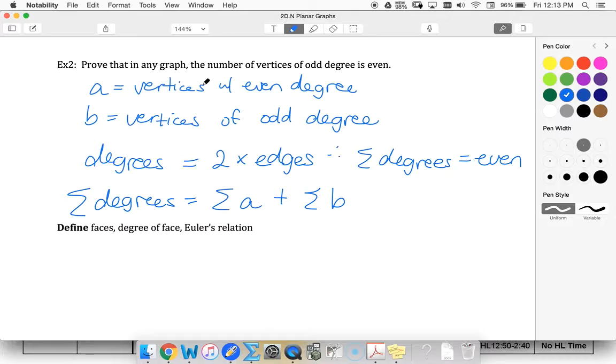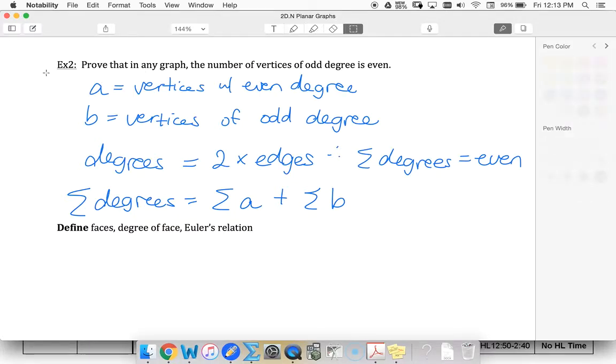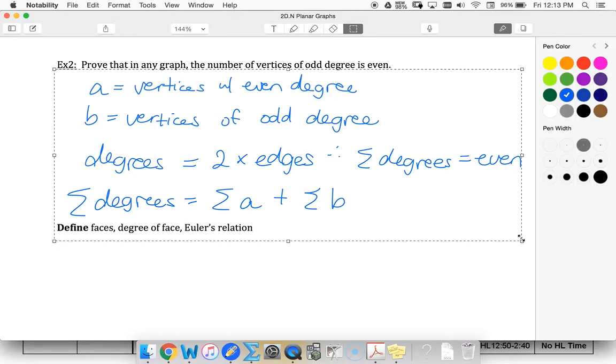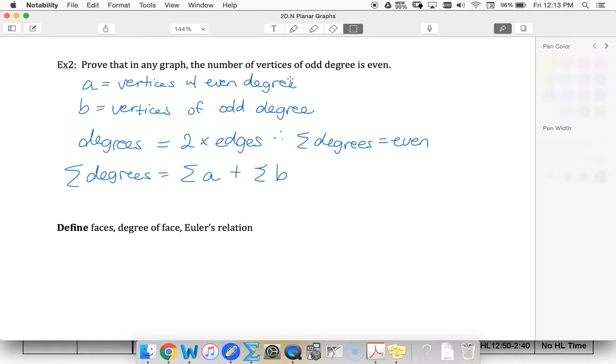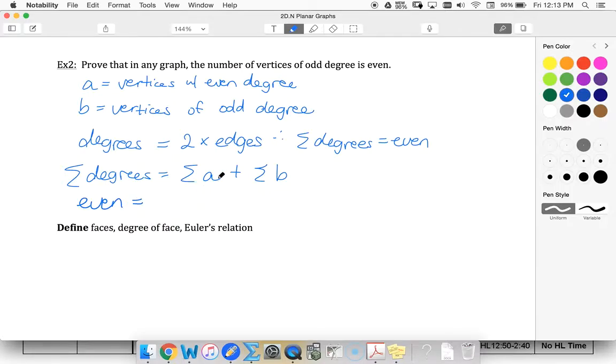Well, I know that A vertices had even degree, so this value is going to be even. This must be even because it's the sum of even numbers.